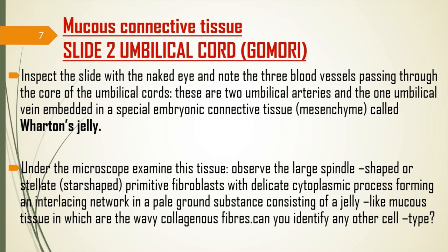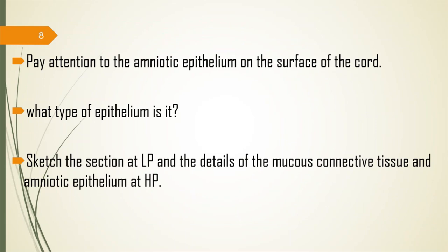The first type we're going to look at is mucus connective tissue found in the umbilical cord. Inspect the slide with the naked eye and note the three blood vessels passing through the core — two umbilical arteries and one umbilical vein — embedded in an embryonic connective tissue mesenchyme called Wharton's jelly. Under the microscope, observe the large spindle-shaped or stellate, star-shaped primitive fibroblasts with delicate cytoplasmic processes forming an interlacing network.